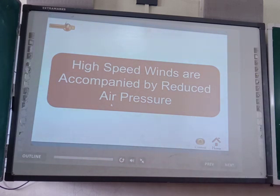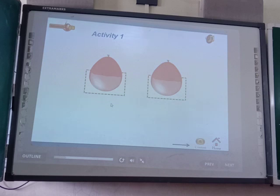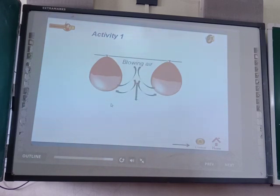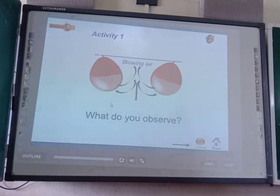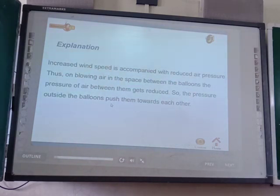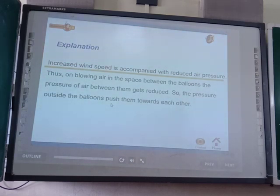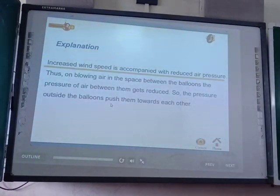The next property is: high speed winds are accompanied by reduced air pressure. To demonstrate this, take two balloons filled with a little water, blow them up and hang them side by side with a rope or rod. Now blow air in the space between the two balloons. The general expectation is that the balloons should move apart, but the reverse happens — they move towards each other. This is due to increased wind speed being accompanied by reduced air pressure.